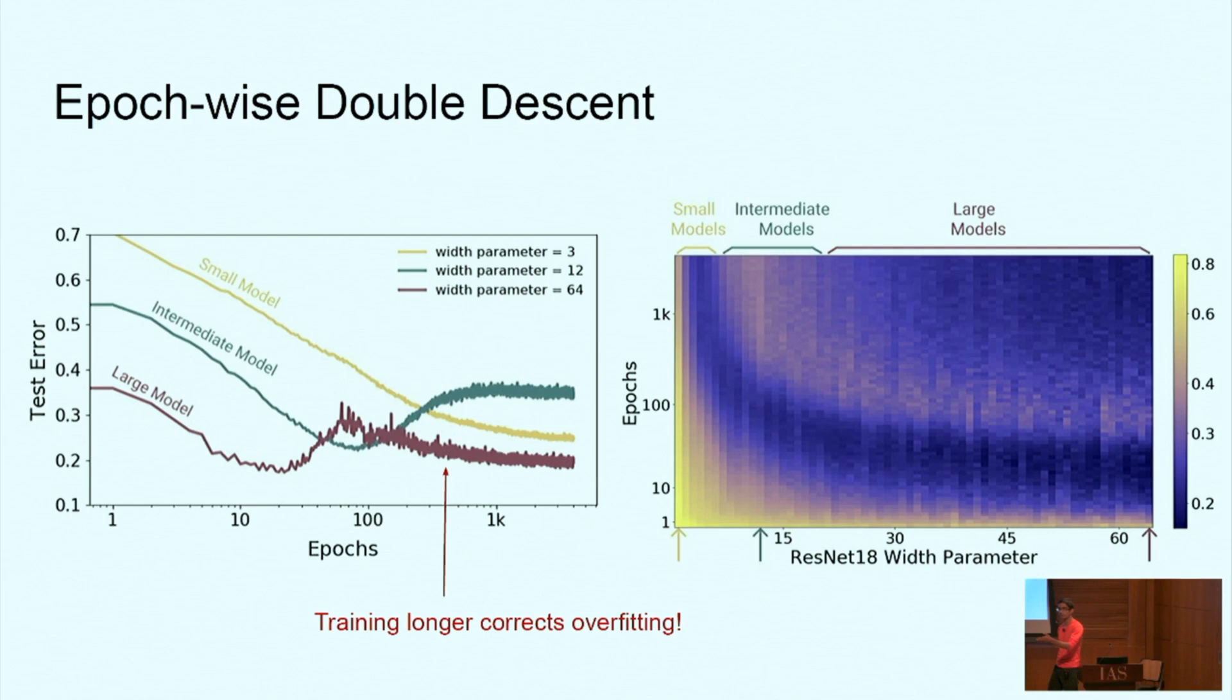Is this for standard learning rates? Good, so this holds. In the paper we've done, so this particular experiment is for SGD with a 1 over square t learning rate schedule. Epoch-wise double descent holds even with a constant learning rate schedule, it holds with Adam, it holds with momentum, with weight decay. There are a lot of experiments in the paper. This is fairly universal, it happens everywhere we've tried.